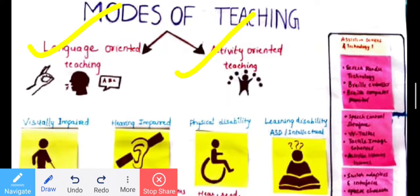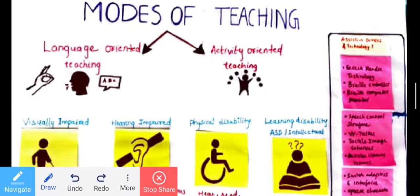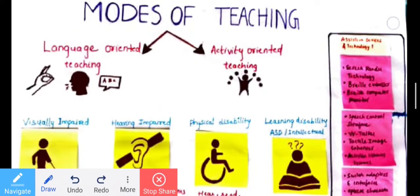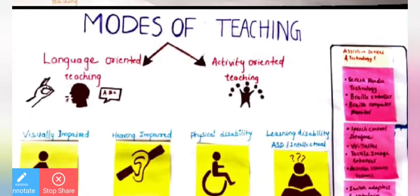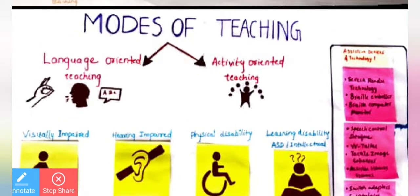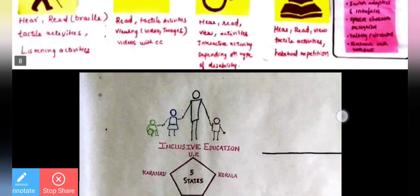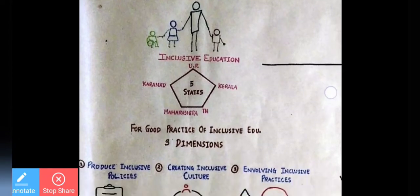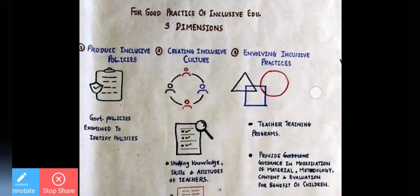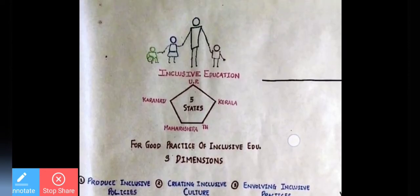Language-oriented teaching includes things like Braille, tape recorders, audio-visual aids, and different types of materials. We are now coming to the main discussion on inclusive education.